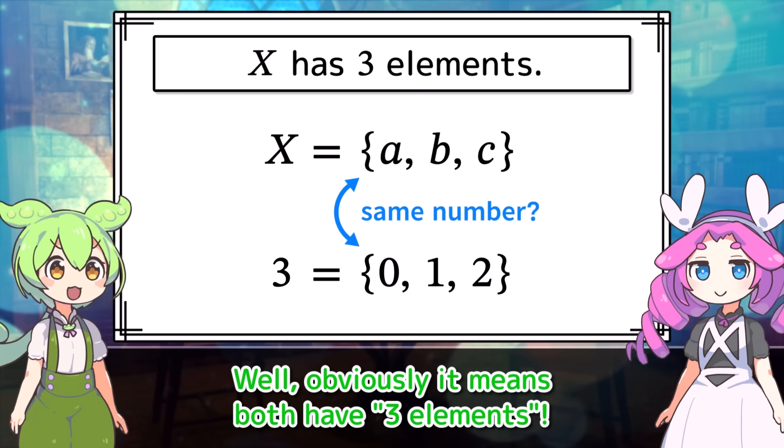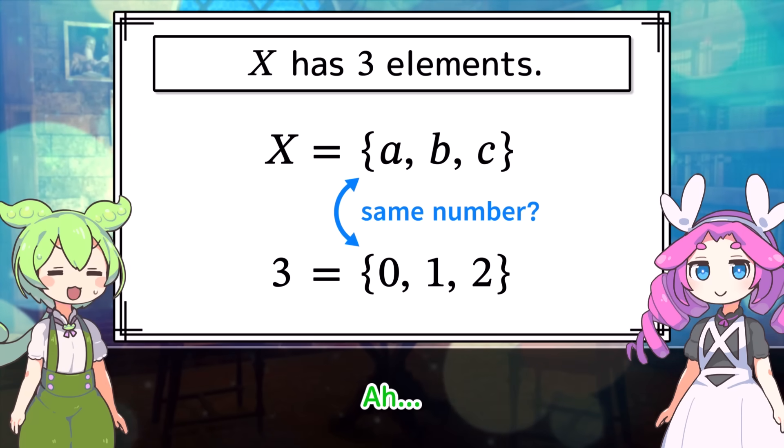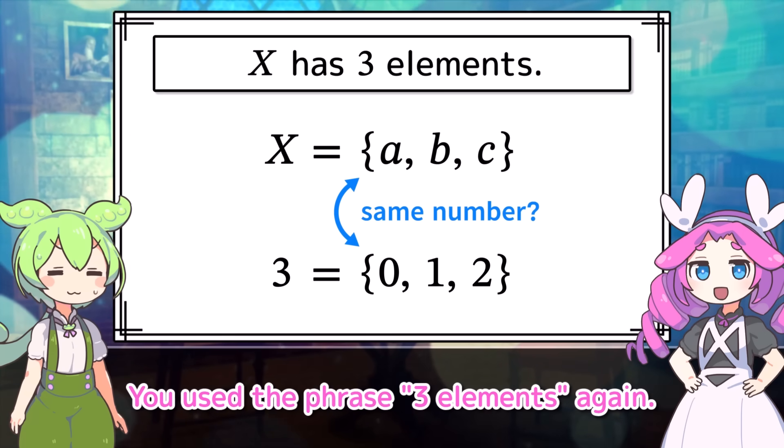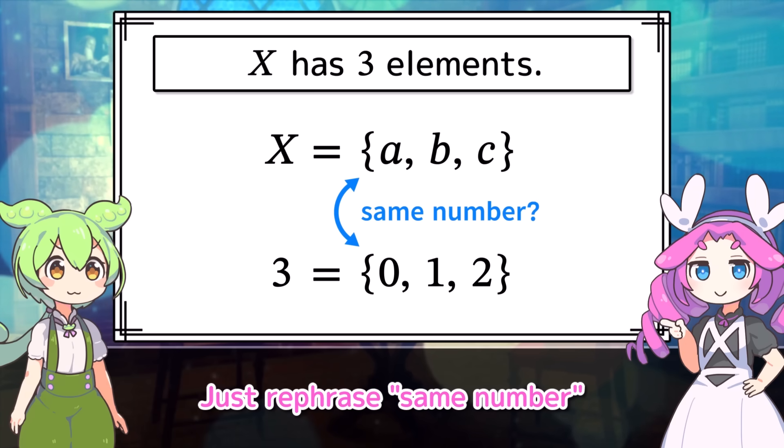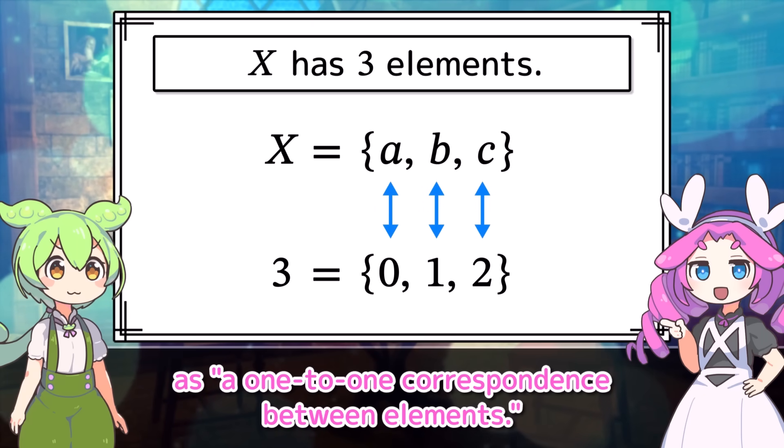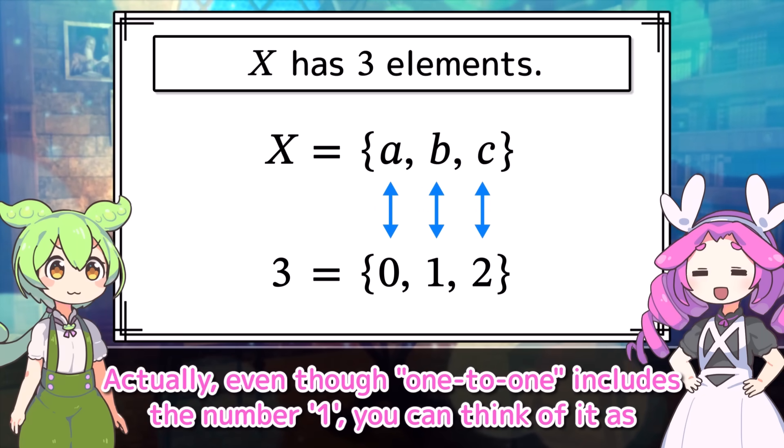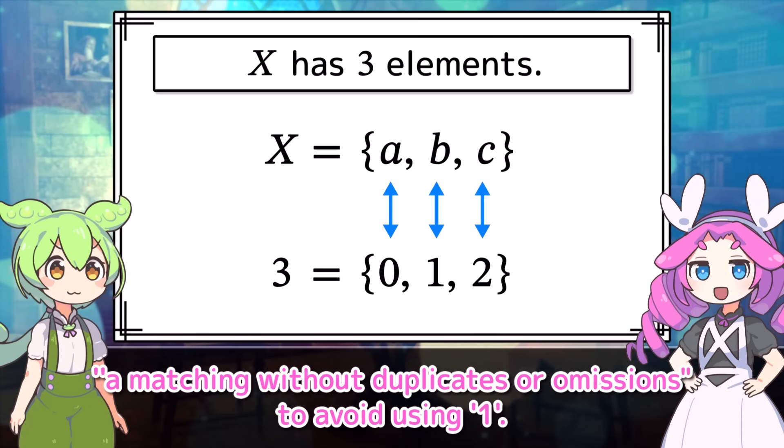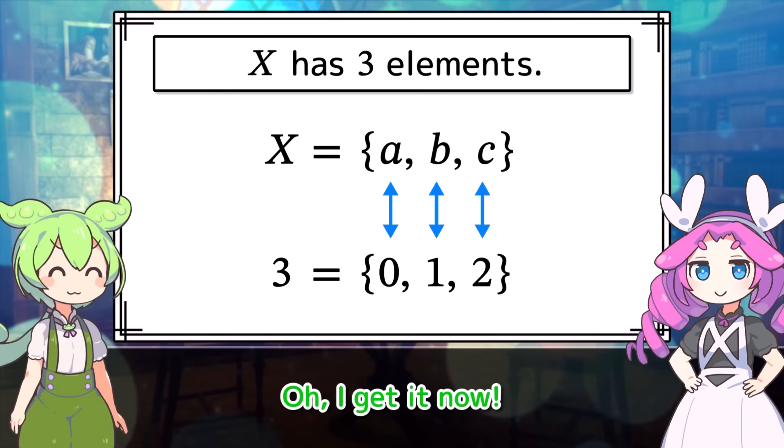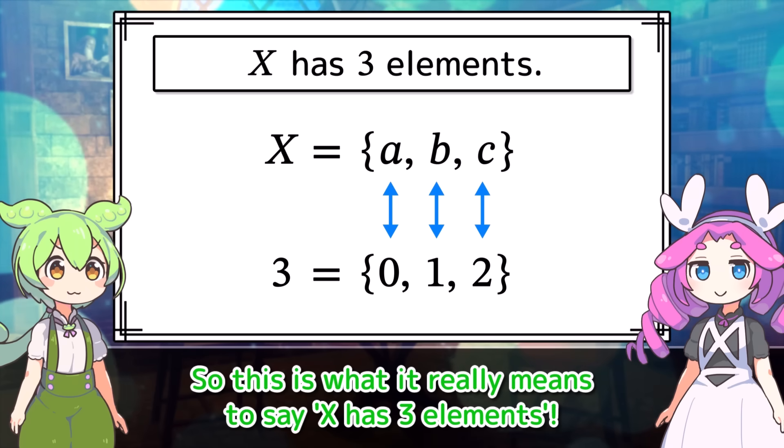Then what does same number actually mean? Well, obviously it means both have three elements. Ah, you use the phrase three elements again, but it's okay. Just rephrase same number as a one-to-one correspondence between elements. Actually, even though one-to-one includes the number one, you can think of it as a matching without duplicates or omissions to avoid using one. Oh, I get it now.